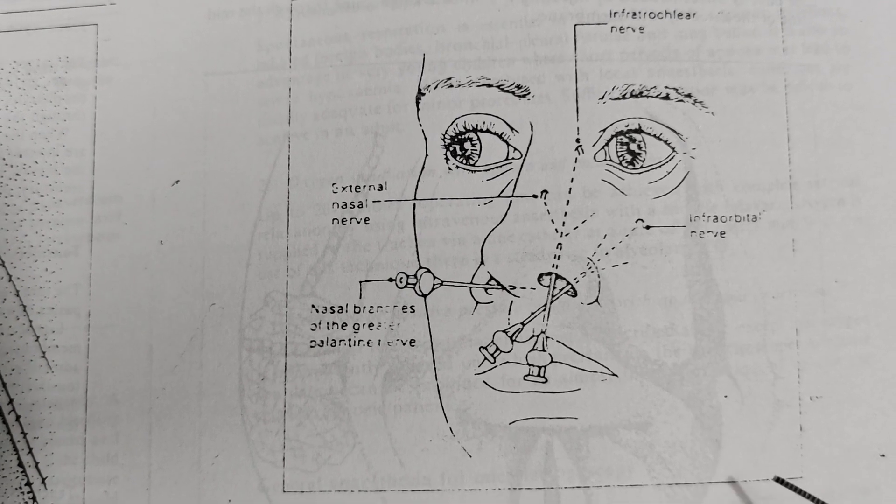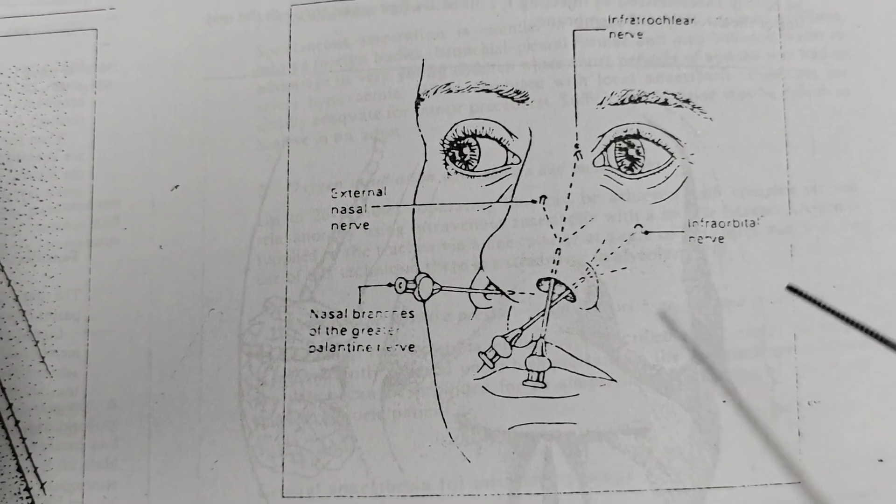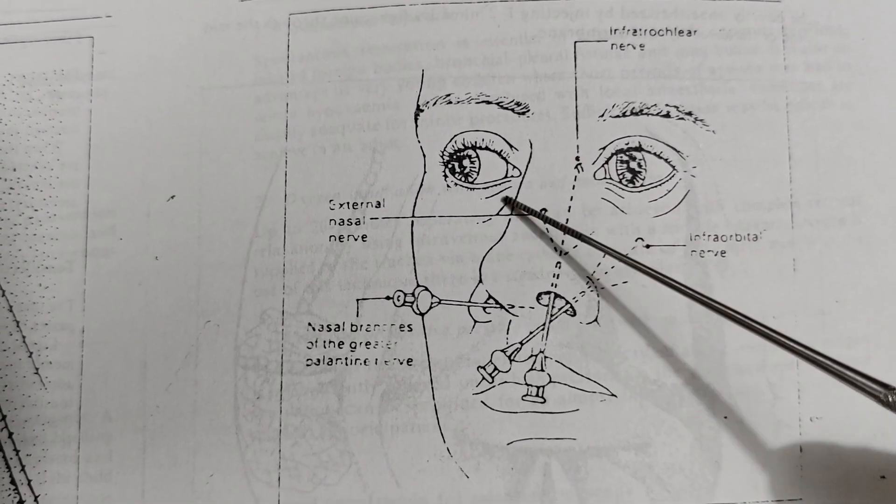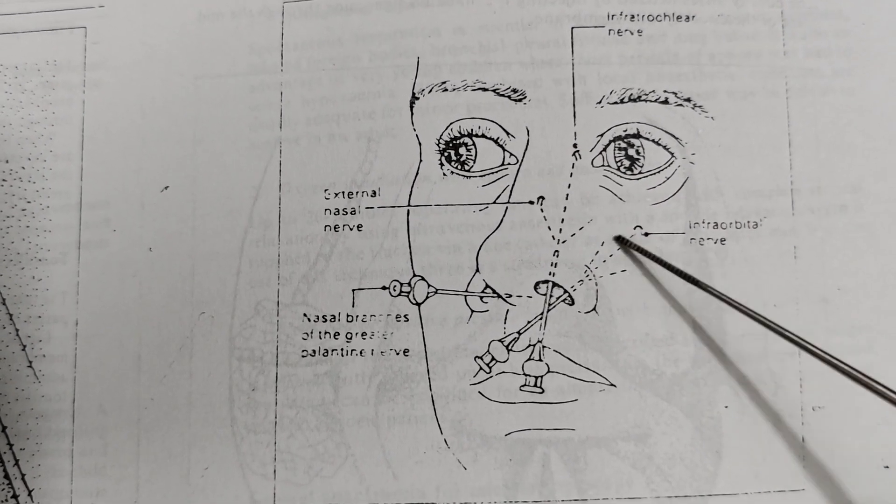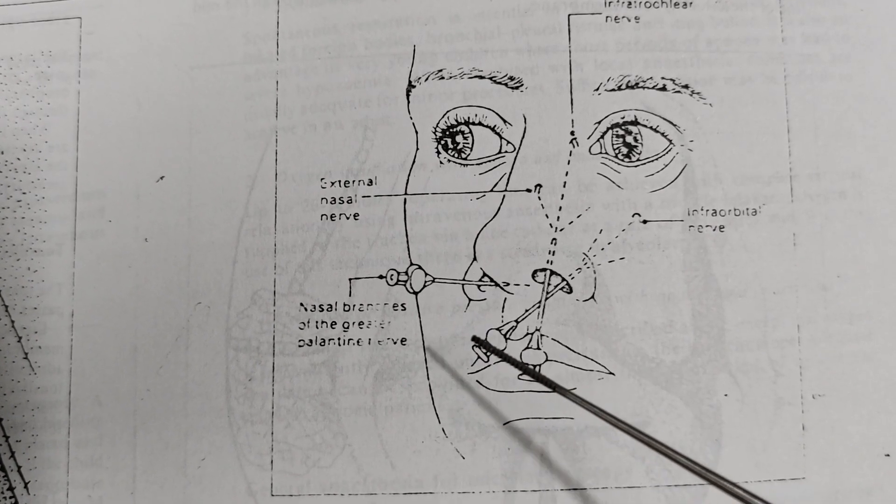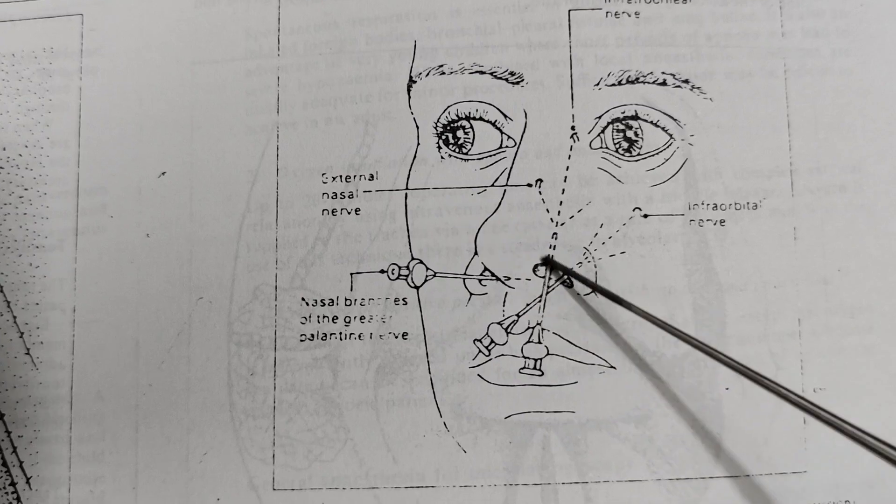The nose gets its nerve supply through the infratrochlear, the external nasal, infraorbital, and branches from the greater palatine nerves.